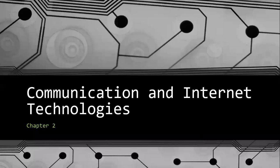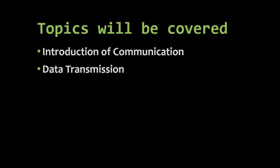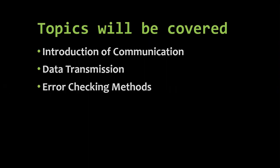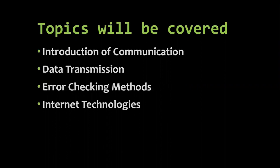Today we are going to start chapter number two, that is Communication and Internet Technologies. In this chapter we are going to cover communication means — how devices connected with each other communicate — data transmission, which means how data is moved from one device to another device, then error checking methods, which is the most important topic of this chapter, and then internet technologies — the equipment and components required to connect with the internet.